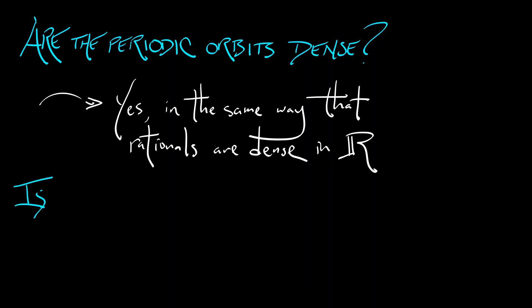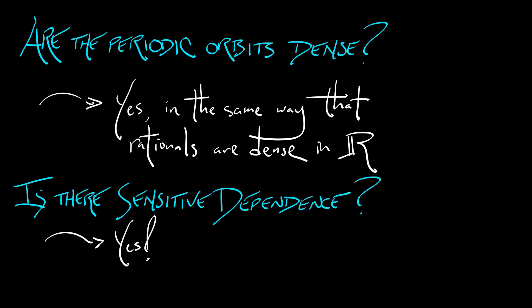Is there sensitive dependence on initial conditions? That is, if I start with two points that are really close, what is going to happen over time? And the answer is as follows. If I pick two points that are very, very close, that means that they are the same in terms of their symbol sequences for the first nine digits or 90 digits or 9,000 digits.